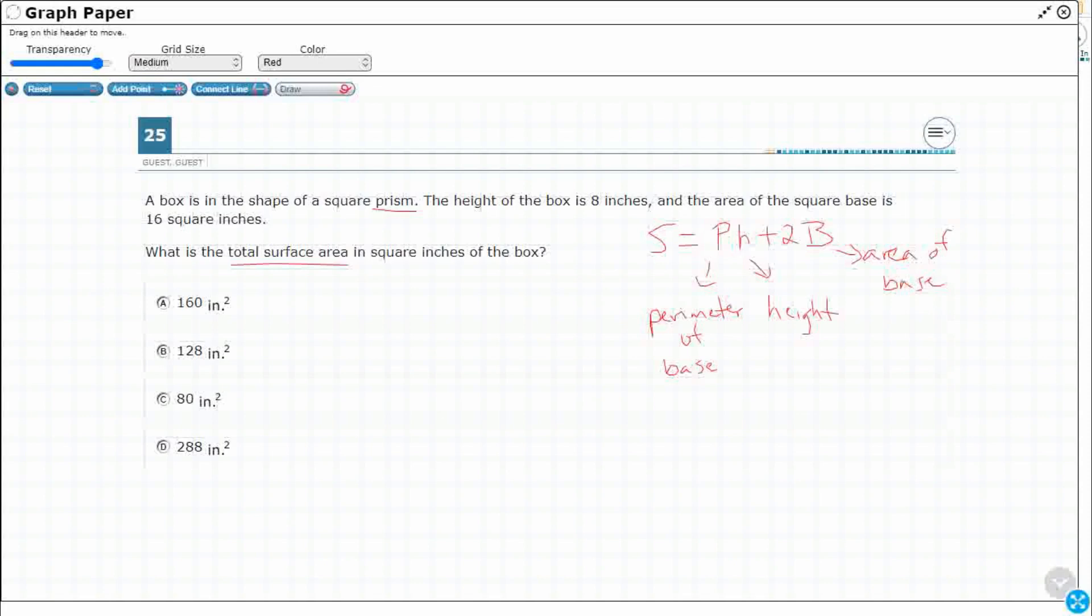So a box is in the shape of a square prism. So let's just make it look kind of like this, and it might not be to scale, but that's fine. We can just kind of visualize it here. So let's just get a few measurements on here. So the height of the box is 8 inches. I'm going to make the height this way. So 8 inches is my height, and the area of the square base is 16. So area is on the inside, right? So I'm going to say area equals 16 square inches. That's all they give us.